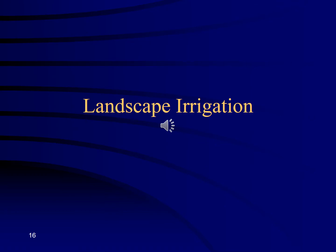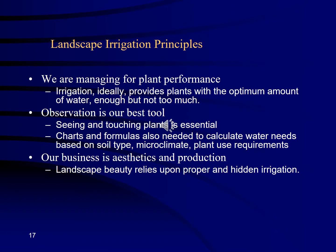Now that you know how nutrients move around, what they are, and what they do in a plant, let's look at the application of this to irrigation systems. We are managing plants to perform how we want them to — healthy, vigorous, and strong — whether to look good or serve a human function. For a turf field we want strong grass for a soccer field; in an orchard, high production; in a landscape, good aesthetics. Our business is aesthetics and production.